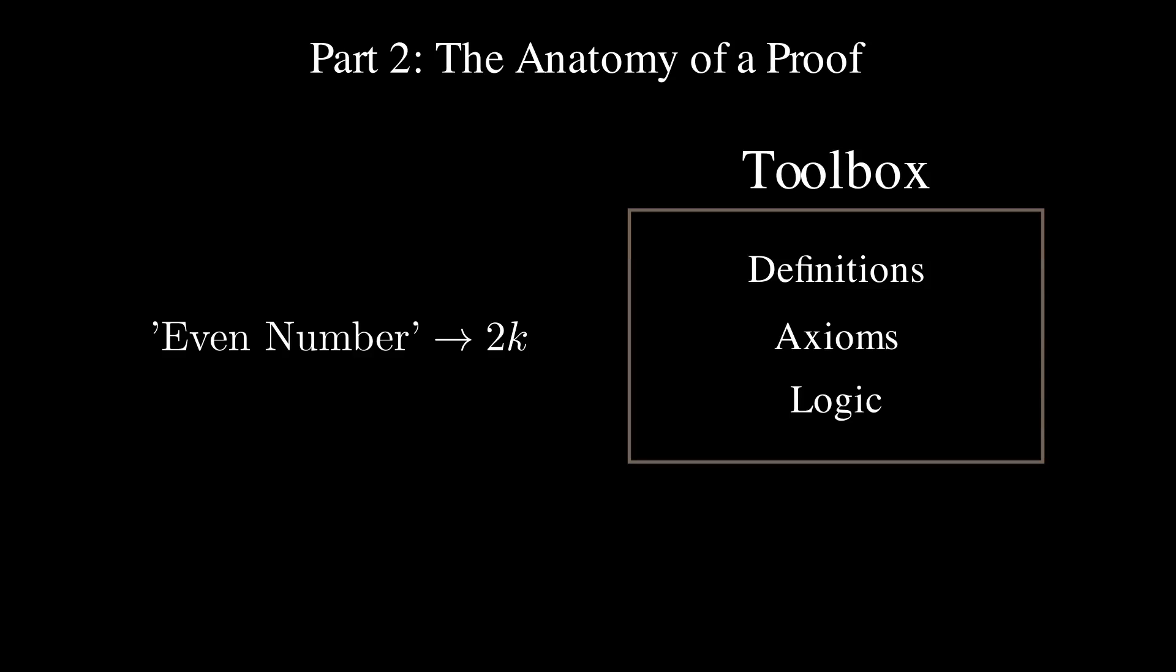We also have axioms. These are the fundamental rules we agree on without proof. Things like A plus B is the same thing as B plus A. These are basically our starting points.